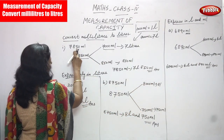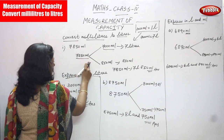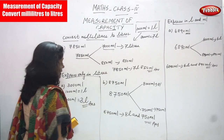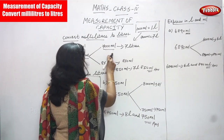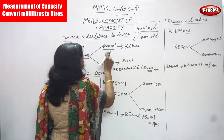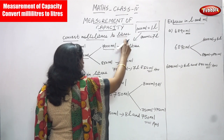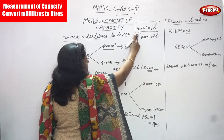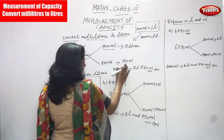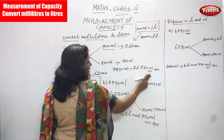To recap: 7850 ml is converted into 7 liters and 850 ml. Separate 7850 ml into 7000 ml and 850 ml. 7000 ml is converted into 7 liters because 1000 ml equals 1 liter. Write 850 ml as it is.